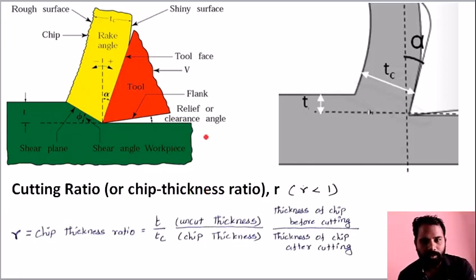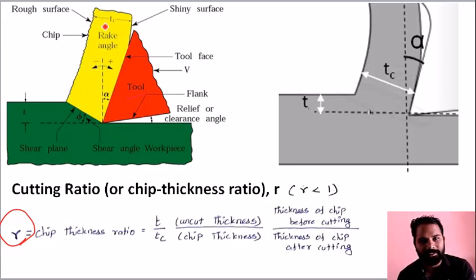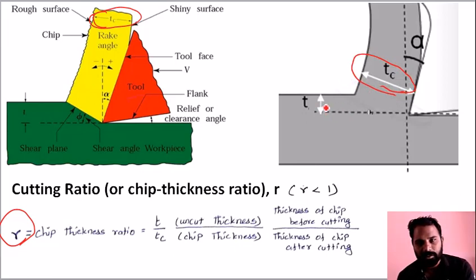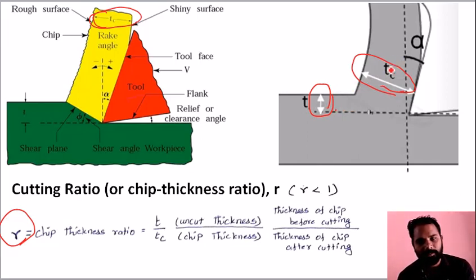The chip thickness ratio is R. This is the basic diagram. In green color, the workpiece. In red, the tool, and in yellow color, the chip. The thickness in yellow is the chip thickness, Tc. Uncut chip thickness is T — this is the thickness of the chip before cutting. Thickness of chip after cutting is Tc. T divided by Tc is the chip thickness ratio.